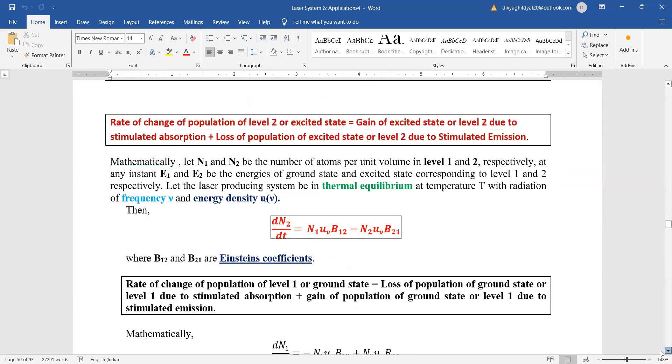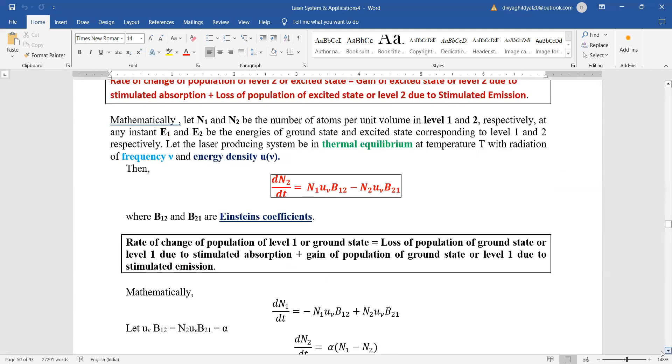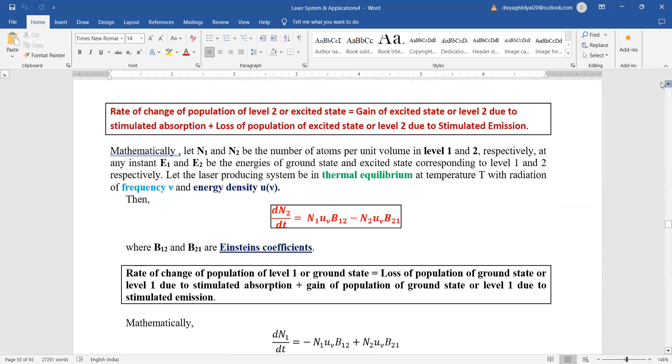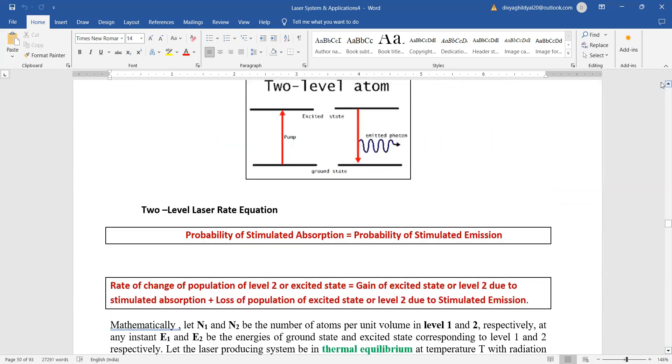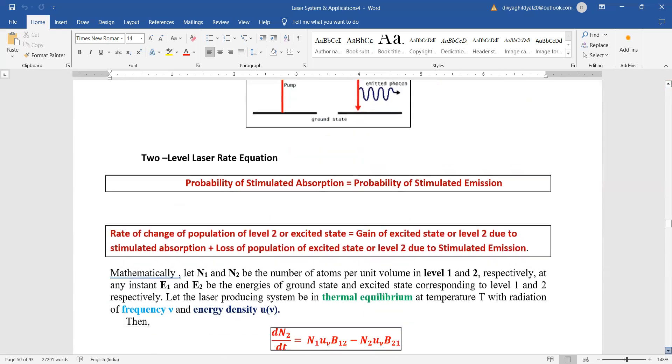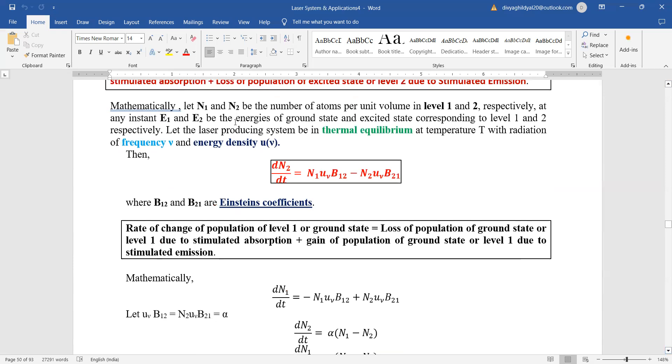Now, in order to derive an expression for rate equation, let us simplify it. First, we will draw the energy levels one and two like this, and write a very short description. Let N1, N2 be number of atoms in level one and level two.